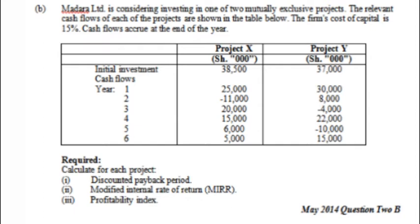Cash flows are given for Year 1 through Year 6, and remember we are told cash flows accrue at the end of the year. The required calculations are: number one, discounted payback period; number two, modified internal rate of return (MIRR); and number three, profitability index. That is what we are required to calculate for each project — that's why I said you should carry a calculator.